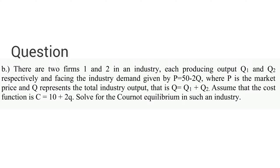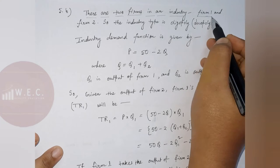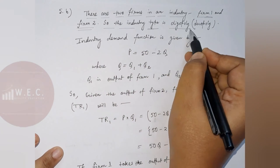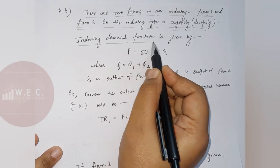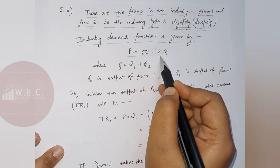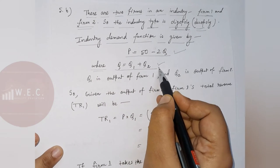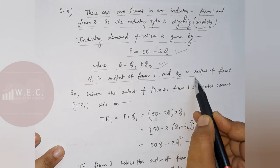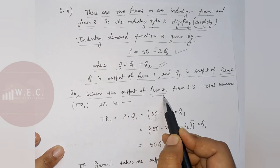Read the question thoroughly first. The industry type is oligopoly with two firms, so it is a duopoly. The industry demand function given is P equals 50 minus 2Q, where Q is the total industry output equal to Q1 plus Q2. Q1 is the output of Firm 1 and Q2 is the output of Firm 2.